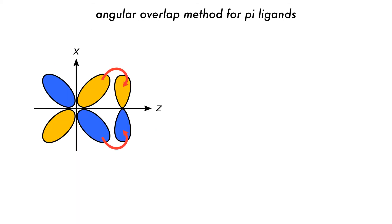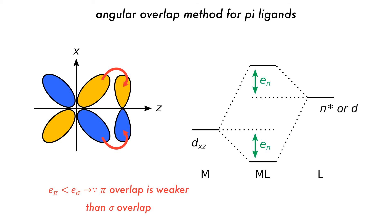The angular overlap method can also be used to determine the splitting for pi interactions between metals and ligands. For pi-acceptor ligands, the strongest interaction is between the dxz orbital and a ligand pi-star orbital. The antibonding orbital with large pi-star character is higher in energy by e-pi than the original ligand acceptor orbitals.